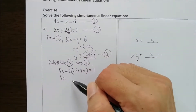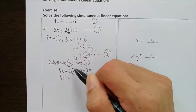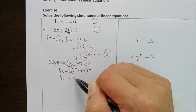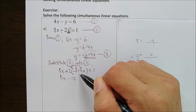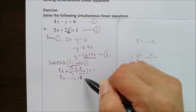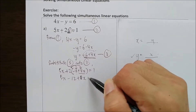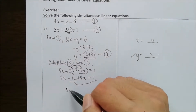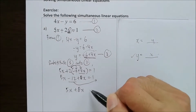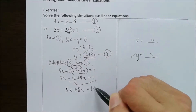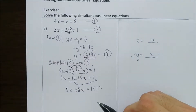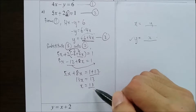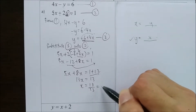I simplify it: 2 times 6 is 12, and 2 times positive 4 is positive 8. I move the constant over, and get 5x plus 8x equals 1 plus 12. So I get 13x equals 13, which gives x equals 1.